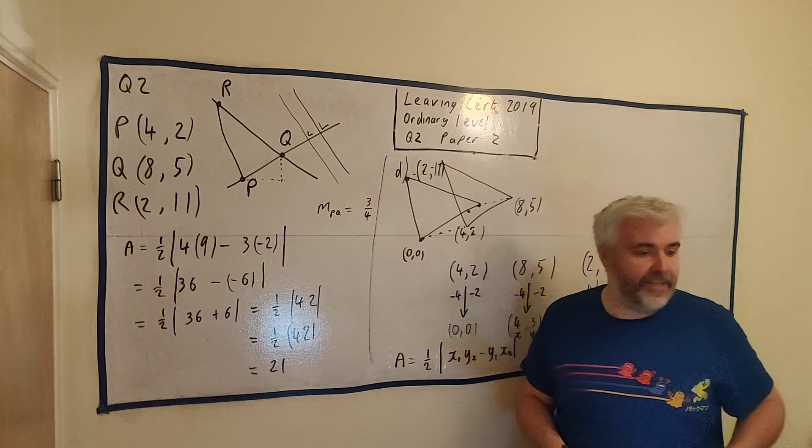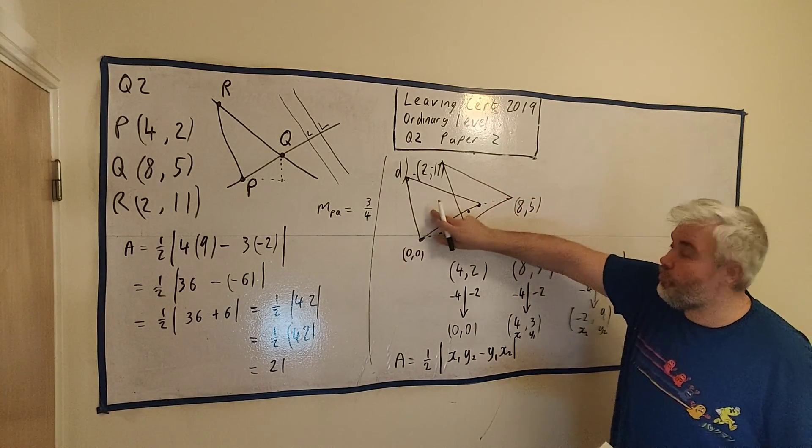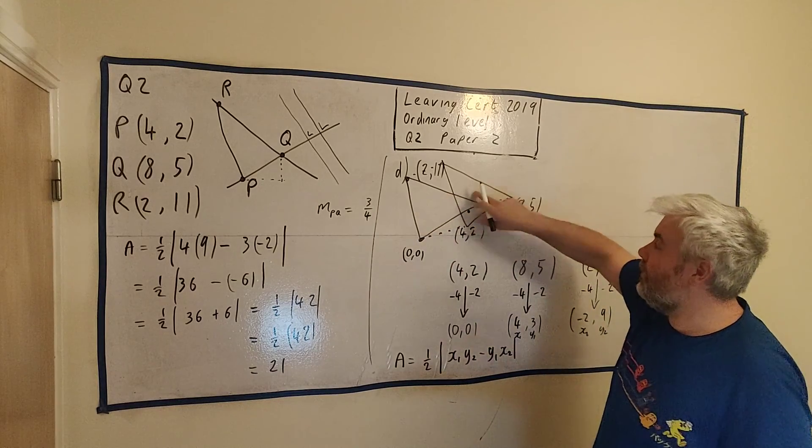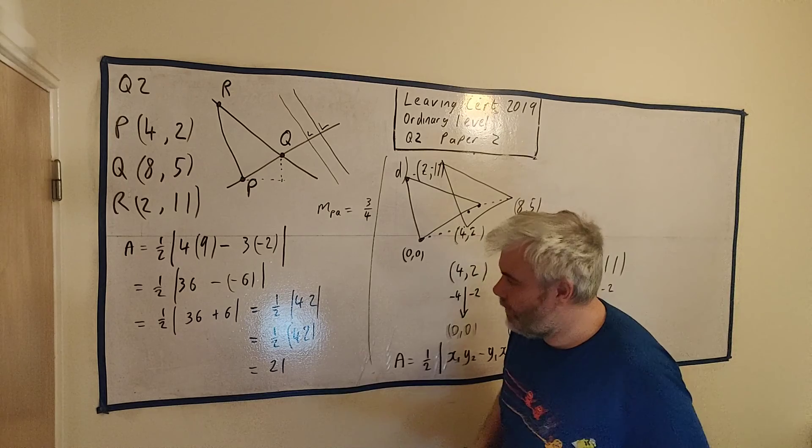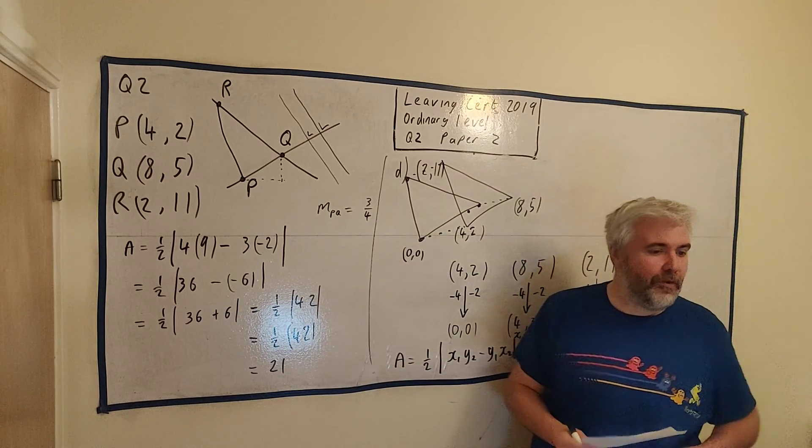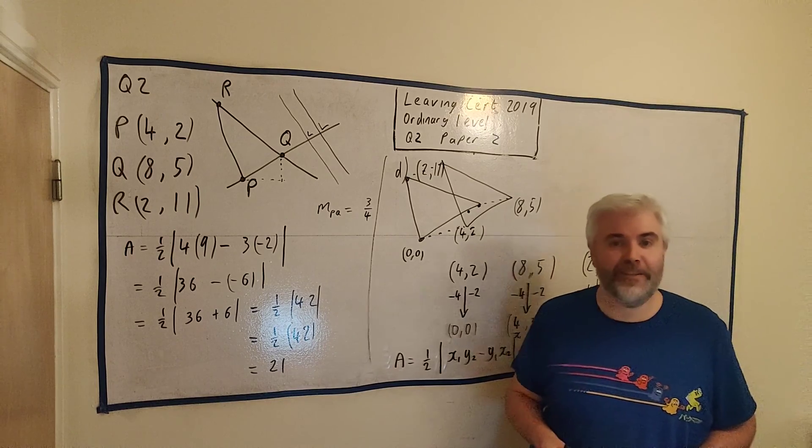A half of 42 is 21, and that's our final answer. That is the area of this new triangle, but it's also the area of the old triangle, which is what they asked us. So if you have any questions about any of those, please put them in the comments below and I'll get back to you as soon as I can.